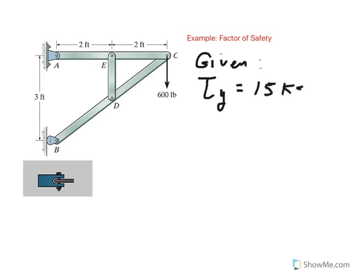Remember, KSI means kilo PSI, so this is 15,000 PSI. And we are told that we want to use a factor of safety of, so FS stands for factor of safety of 1.5. And based on this factor of safety and the strength of this pin at A, we want to find the minimum diameter of the pin at A.